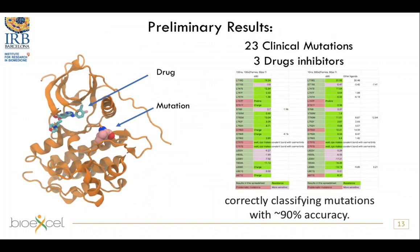Some preliminary results — we are still running simulations on this. We have assembled 23 clinical mutations and are testing three drug inhibitors. Overall, what we are observing is that we are correctly classifying the mutations with about 90% accuracy, which is good. The 10% we are missing are mostly related to cases where the delta G binding is small — within the root mean square error of our calculation, which we have assessed to be around 1 kcal/mol, which is also what others doing this kind of calculation have observed.